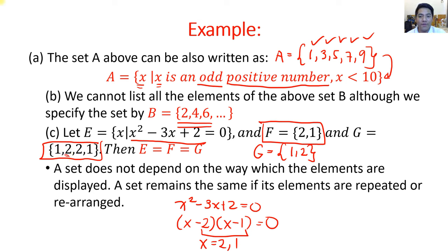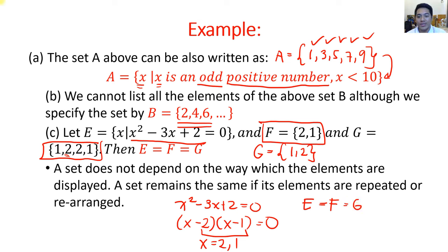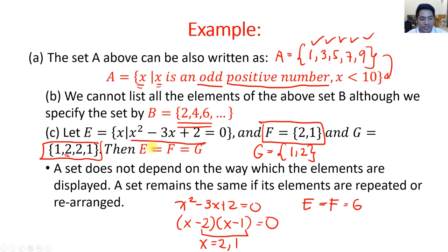Therefore, the sets described by E, F, and G are all equal. A set does not depend on the way its elements are displayed — a set remains the same if its elements are repeated or rearranged.